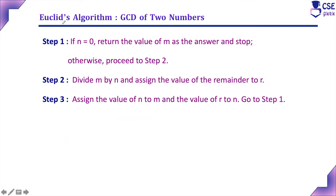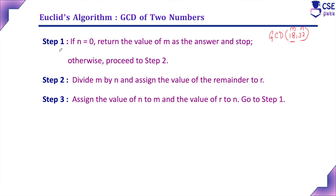For example, consider Euclid's algorithm to find the GCD of two numbers. In Euclid's algorithm, this is the sequence of instructions to find the GCD of two numbers M and N. The first step is: if N equals zero, return M as the result and stop the program.